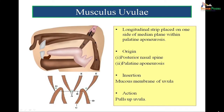The musculus uvulae arises from the posterior nasal spine and palatine aponeurosis. Its insertion is into the mucous membrane of the uvula. This muscle pulls up the uvula. The palatine aponeurosis splits to enclose the musculus uvulae muscle, as seen in the figure.